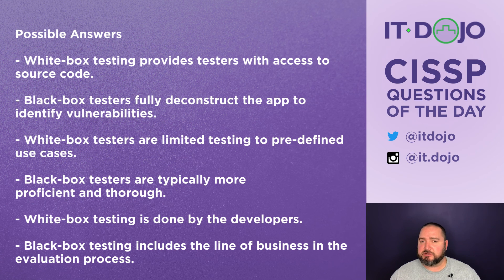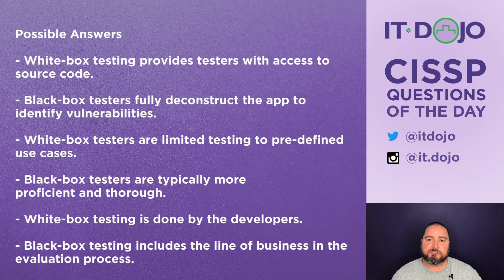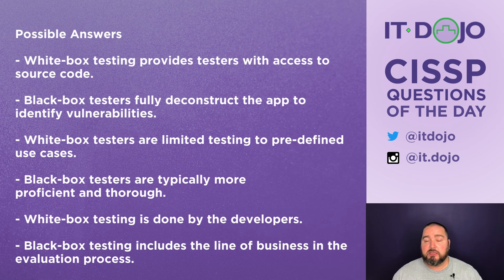Gray box testing is really a combination of white box and black box testing, so we won't worry about it here. When you look at black box versus white box testing, sometimes black box testing is referred to as functional testing and sometimes white box testing is referred to as structural testing.